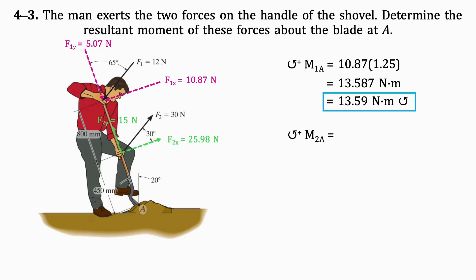To get the moment of F2 about A, we multiply the X component of F2 by its distance from A, which is 0.45 metres. The result is 11.69 newton metres in the clockwise direction.